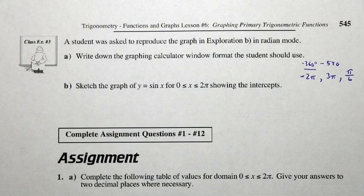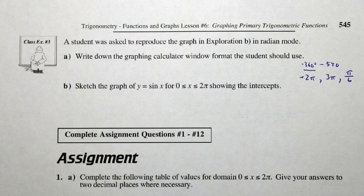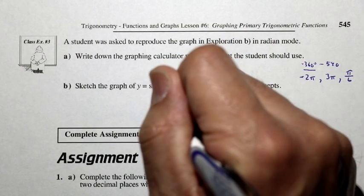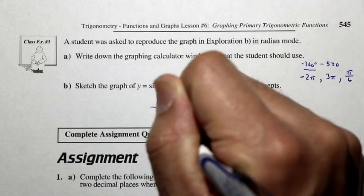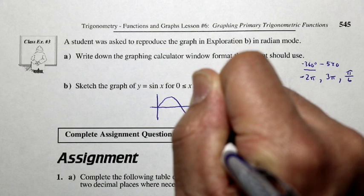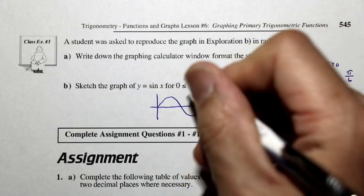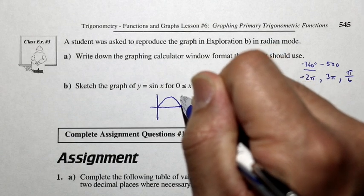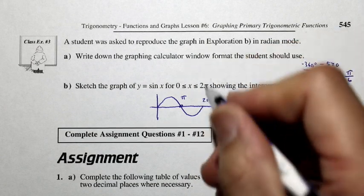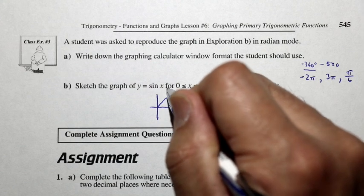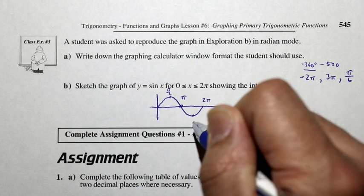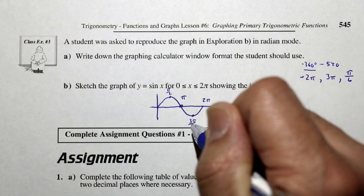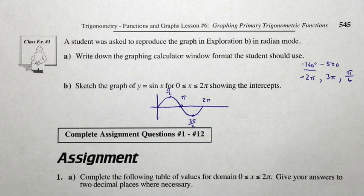So let's sketch the graph of y equals cosine x for 0 to 2 pi, showing the intercepts. Just a quick sketch this way. It goes up to a maximum, down to a minimum, and back up. And this spot here is going to happen at 180 degrees, or in other words, it happens at pi. This is 2 pi. This point here is pi over 2, and this minimum here is at 3 pi over 2. Okay, you have enough to tackle your assignment, and I will see you in class.